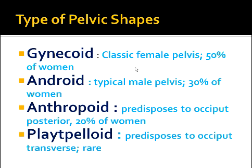There are four types of pelvic shapes: gynecoid, android, anthropoid, and platypeloid. These four types were defined by Caldwell and Moloy, who examined thousands of female pelvic X-rays and concluded these four types. Gynecoid is the classical female pelvis, and 50 percent of women have this type.